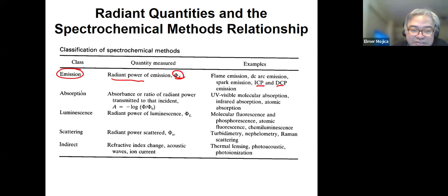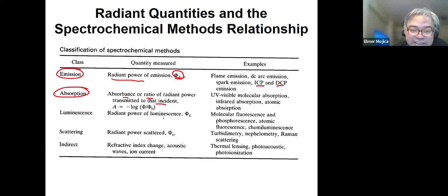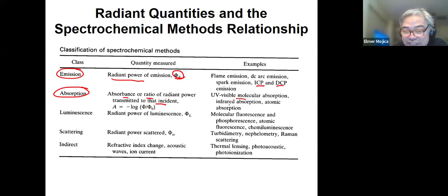Then we can look at absorption — this is just the absorbance or ratio of the radiant power transmitted to the incident. Examples include UV-Vis, IR, and atomic absorption.